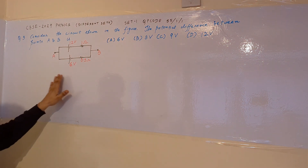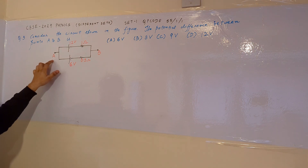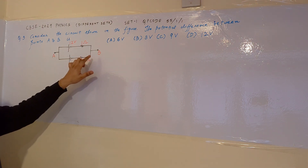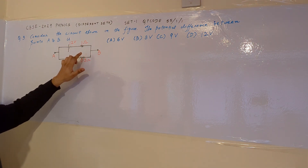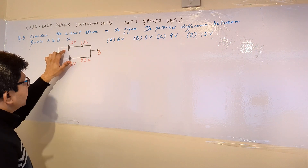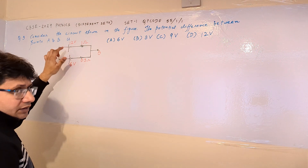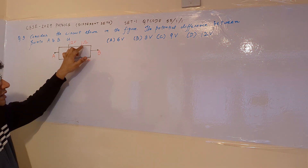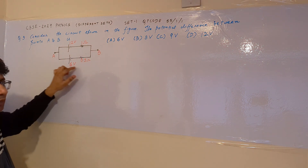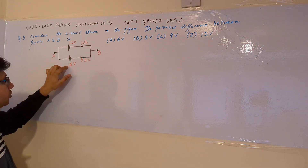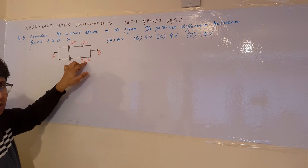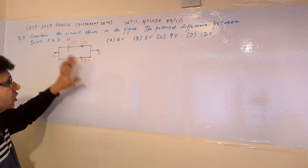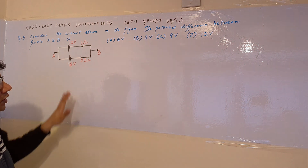There is a circuit given here. In this particular circuit there are two points A and B. In between these two points there are two parallel branches. The first is having a battery of 12 volts with a series resistance of 1 ohm, and the second parallel path is having a 6 volt battery with 0.5 ohms of resistor in series.